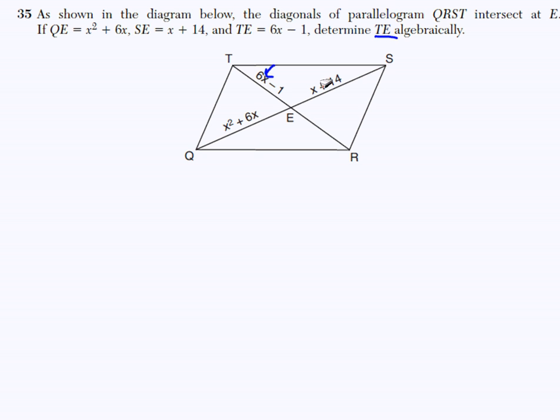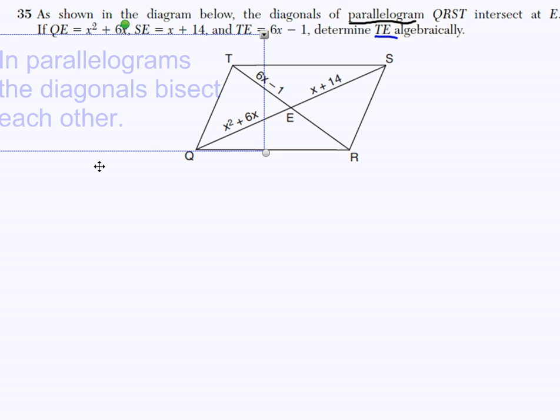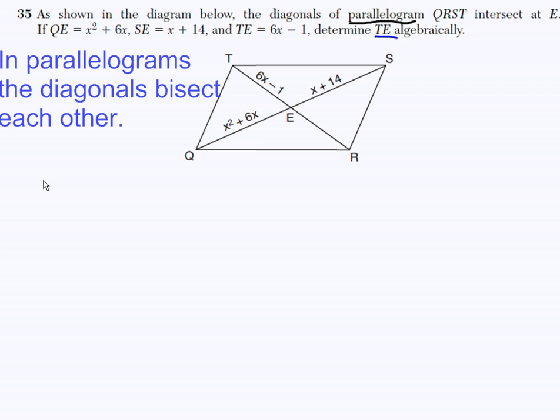How can we relate these expressions? We are told that this is a parallelogram. That's important, because if I know that this is a parallelogram, then I also know that the diagonals are going to bisect each other. Because in parallelograms, the diagonals bisect each other. That's one of the five properties of parallelograms.